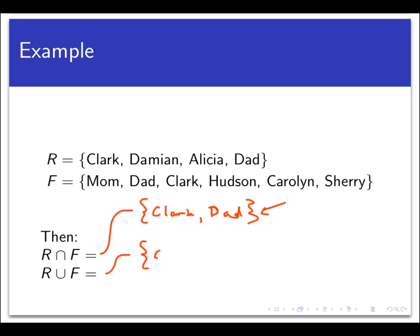And R union F would be the set of all people who are either runners or family members, possibly both. This would consist of Clark, Damian, Alicia, Dad, Mom, Hudson, Carolyn, and Sherry. Some of these people are in both sets, but since we consider OR to be inclusive, this is okay. Note that we do not double list people either — so although my dad is in both sets, we're only going to list him once.